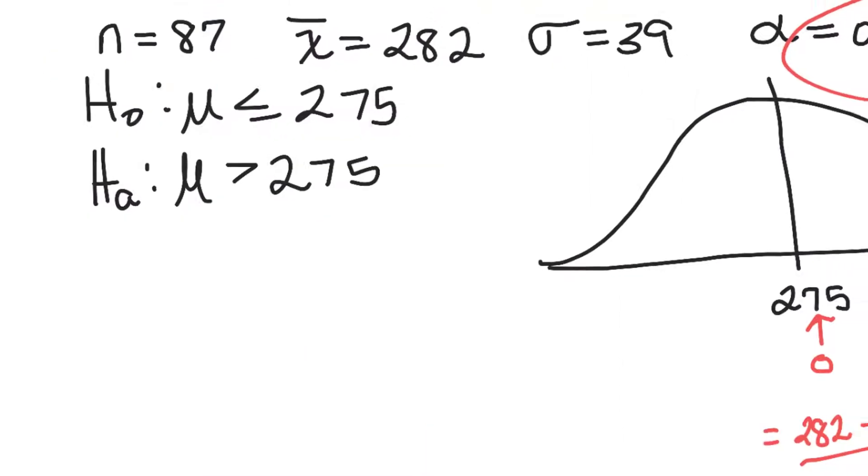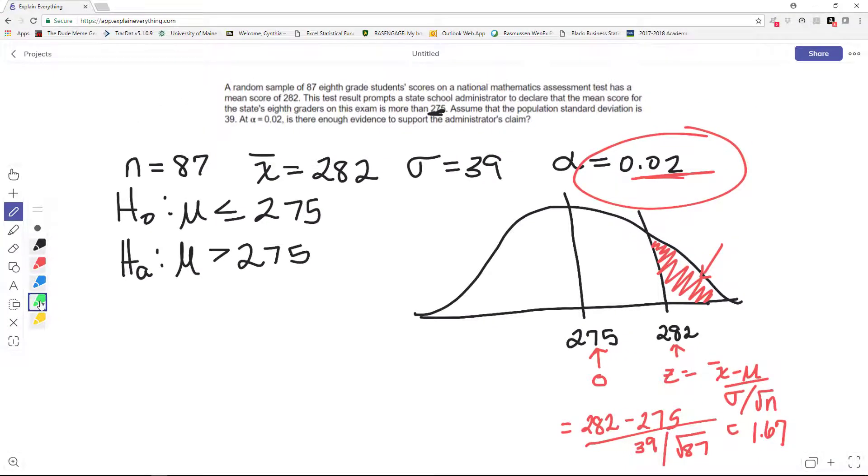However, remember what that value is. That's from here to that z-value, 0.9525.